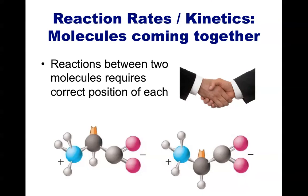Many of the reactions in our body require two molecules to come together and rearrange their bonds. In order for a reaction to occur, the two molecules must contact each other in the right orientation. Think of it as shaking hands — you need to face somebody when you shake their hand. You cannot perform a handshake if you are behind them; you need to be in the correct orientation.